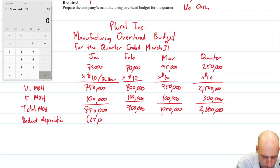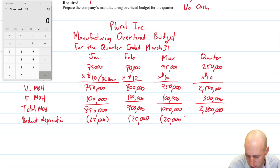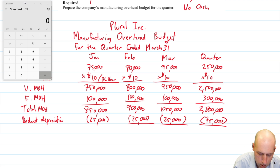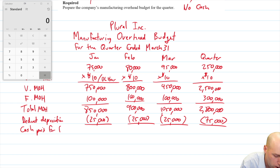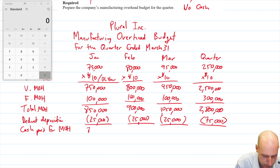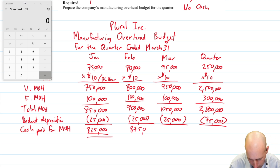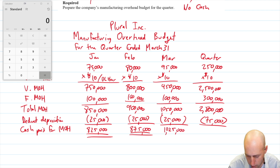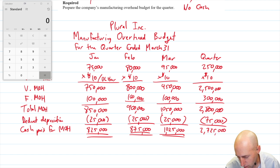Depreciation is $25,000 per month, or $75,000 for the quarter. Deducting it gives us cash paid for manufacturing overhead: $850,000 − $25,000 = $825,000 for January; $900,000 − $25,000 = $875,000 for February; $1,050,000 − $25,000 = $1,025,000 for March; and $2,800,000 − $75,000 = $2,725,000 for the quarter.